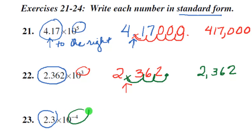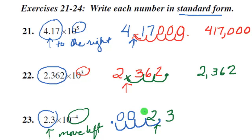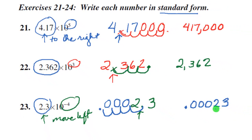In this example we have a negative exponent, so now we are going to move the decimal to the left. Because when you have a negative exponent, we know this number is going to represent a very small decimal. We take the decimal and move it to the left 4 spaces — 1, 2, 3, 4 — and we fill in those slots with zeros. So we have this tiny decimal in standard form: a decimal point, three zeros, and then the 23.